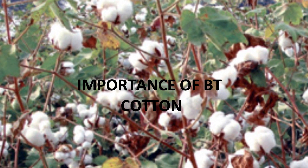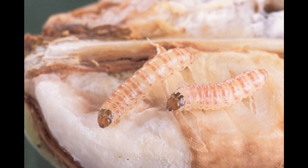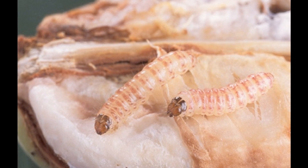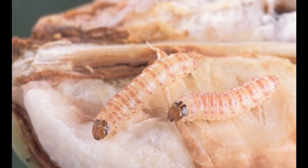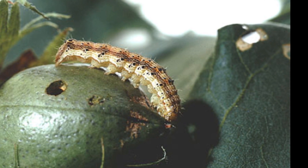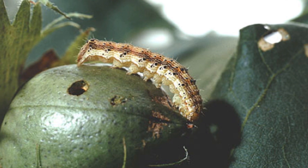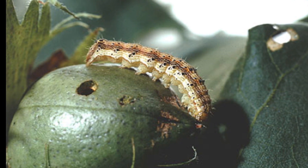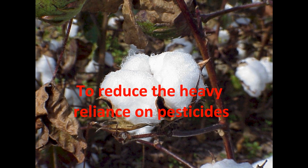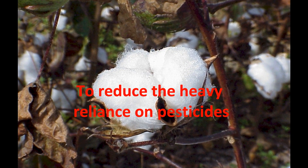Importance of Bt cotton. Cotton has been genetically modified to be resistant to bollworms. Cotton that has been engineered to contain a gene from the bacterium Bacillus thuringiensis, making it resistant to attacks by bollworms. Bt cotton has a decreased pupation rate compared with non-Bt cotton, and it is used to reduce the heavy reliance on pesticides.